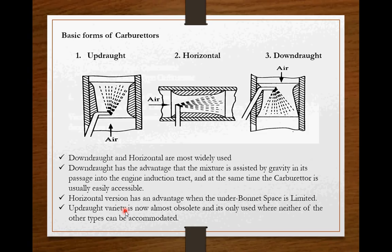Now forms of carburetors. There are three forms of carburetors. First is up-draught, second is horizontal, third is down-draught. As you can see from the picture, when the air flows vertically in upward direction that is called as up-draught, when the air flows in horizontal direction that is called as horizontal version and when the air flows in vertically downward direction that is called as down-draught.